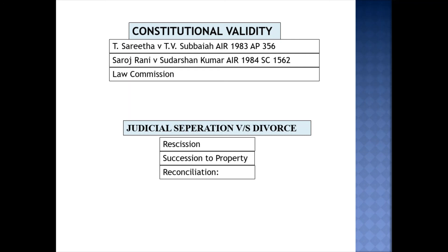Second, succession to property: in the case of death of one spouse during the subsistence of a decree of judicial separation, the other spouse inherits the property of the deceased spouse. But in a decree of divorce, the spouse has no right of inheritance on the estate of the deceased spouse. Third, reconciliation: in judicial separation, marriage is only eclipsed for a while, so there is a scope of reconciliation; but in divorce, there is no scope of reconciliation without a marriage ceremony. Also, in judicial separation, if parties engage in marital intercourse during the subsistence of the decree, it is rendered ineffective automatically, whereas in divorce, such intercourse has no effect on the decree.